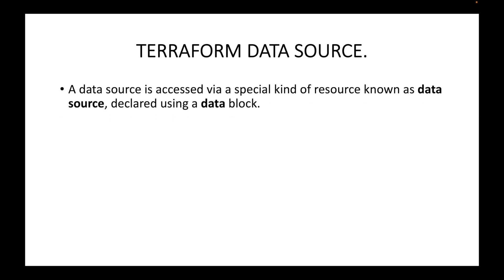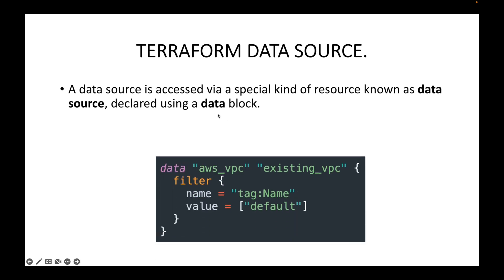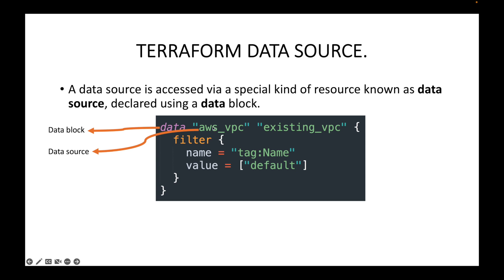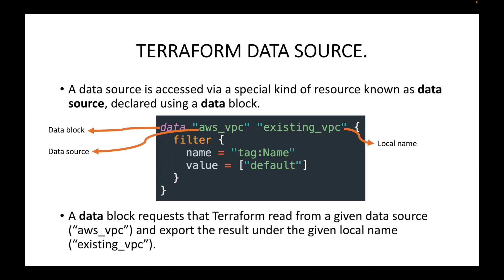A data source block is accessed via a special kind of resource known as a data source, declared using a data block. You use the data block to declare your data source, specifying which data source you want and other information. We use the data keyword to specify the data block, then specify which data source to fetch — in this case, the AWS VPC — and give it a local name so we can refer to it in subsequent code.